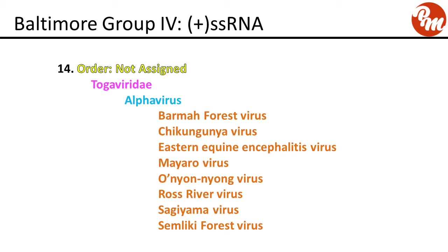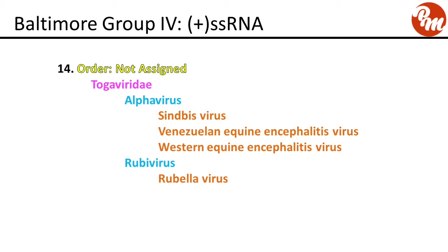Next group, order not assigned, family Togaviridae, genus alphavirus. This includes Barmah Forest virus, chikungunya virus, eastern equine encephalitis virus, Mayaro virus, o'nyong-nyong virus, Ross River virus, Sagiyama virus, Semliki Forest virus, Sindbis virus, Venezuelan equine encephalitis virus, and western equine encephalitis virus. The other genus, rubivirus, includes rubella virus.